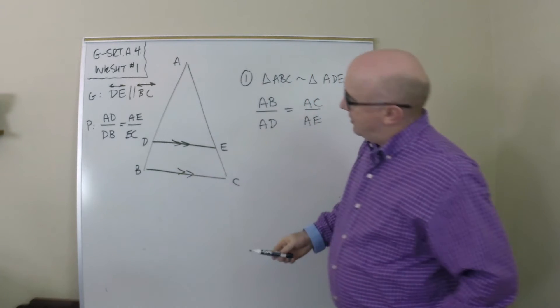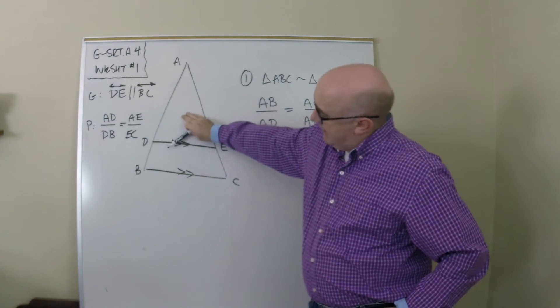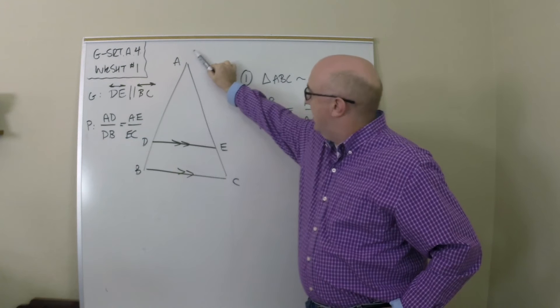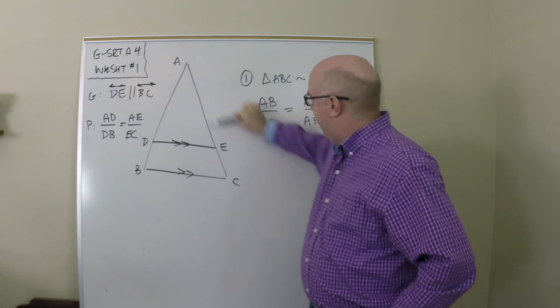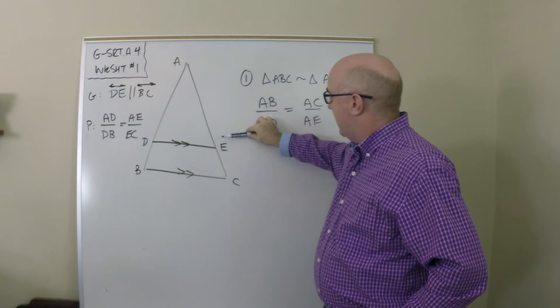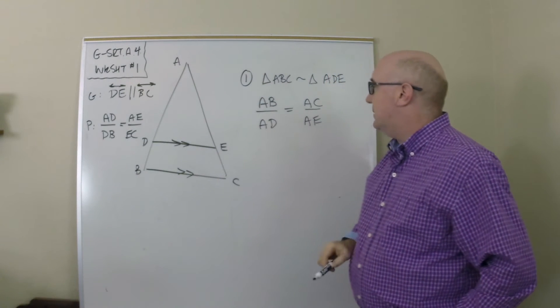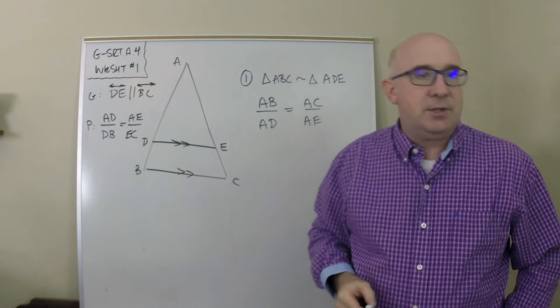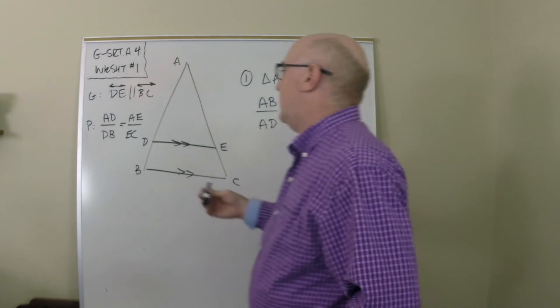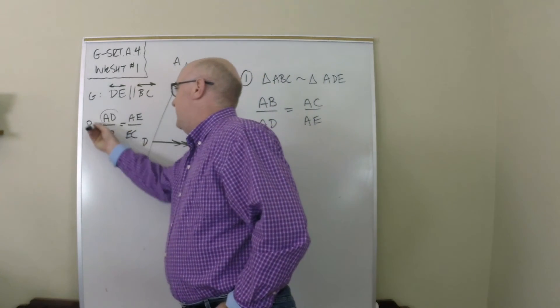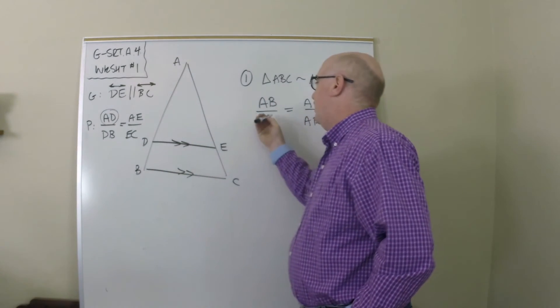Let's make sure you understand that the little guy in here is similar to the big one, so AB to AD, AE to AC, they're proportional. Now you'll notice, remember our goal is to talk about AD. Well good, it's involved.